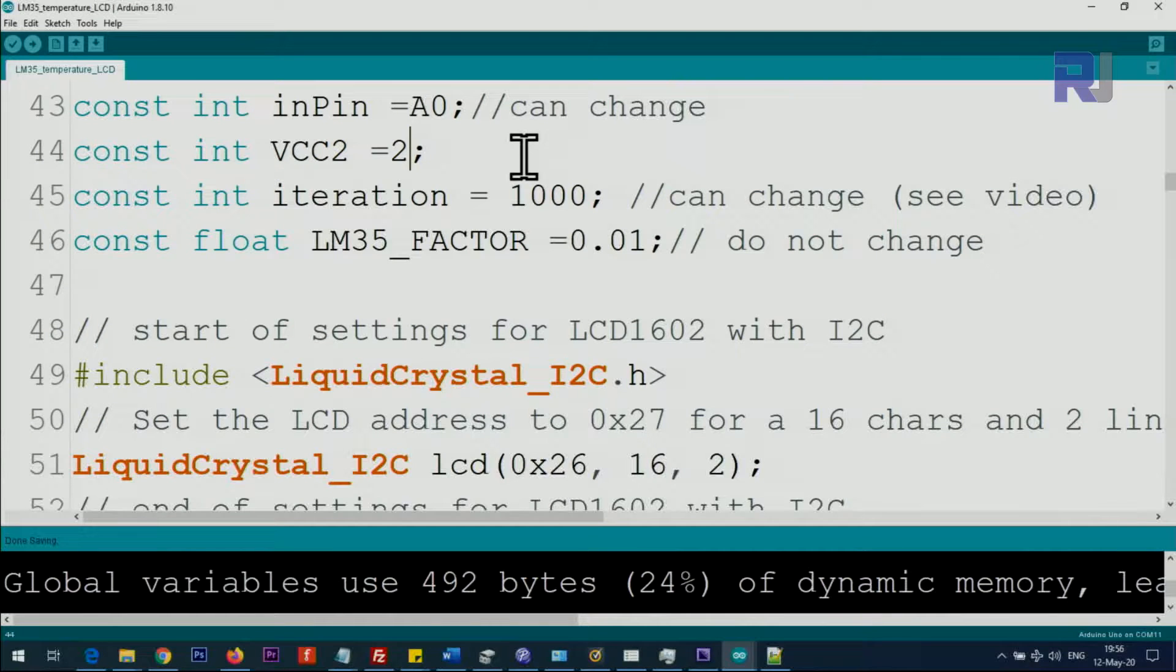Now let me explain the code. We are defining analog 0 as an input pin and then we are defining pin 2 for extra VCC for LM35 because we have only one 5 volts and I do not want to use a breadboard. And then this 1000 iteration is the same as the introduction video which takes 1000 measurement and gets the average. And this LM35_FACTOR is the 10 millivolts per degree Celsius, do not change it.